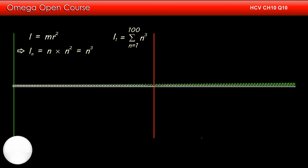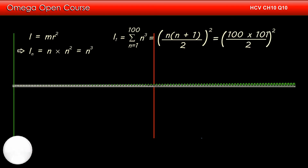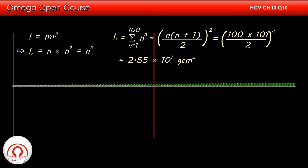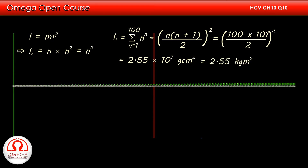Summation of n³ is given by [n(n+1)/2]². Putting the values, we get [100 × 101 / 2]². Simplifying, we get 2.55 × 10⁷ gram centimeter square. Converting to kg meter square units, we get 2.55 kg meter square.